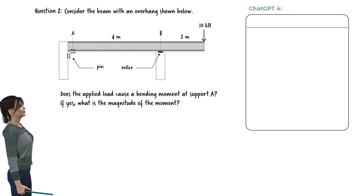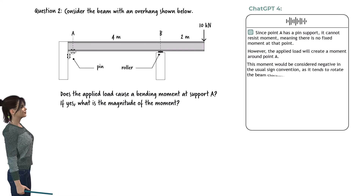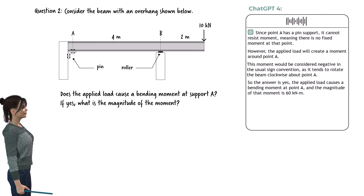Consider a beam with an overhang. Does the applied load cause a bending moment at support A? If yes, what is the magnitude of the moment? Since point A has a pin support, it cannot resist moment, meaning there is no fixed moment at that point. However, the applied load will create a moment around point A. This moment would be considered negative in the usual sign convention, as it tends to rotate the beam clockwise about point A. So the answer is yes — the applied load causes a bending moment at point A, and the magnitude of that moment is 60 kNm.